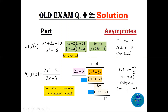For part (a): the only vertical asymptote is x = -2. Since the degree of the numerator is 1 and the degree of the denominator is 3 (cubic), the horizontal asymptote is y = 0. That's a standard rule, and there is no oblique asymptote.